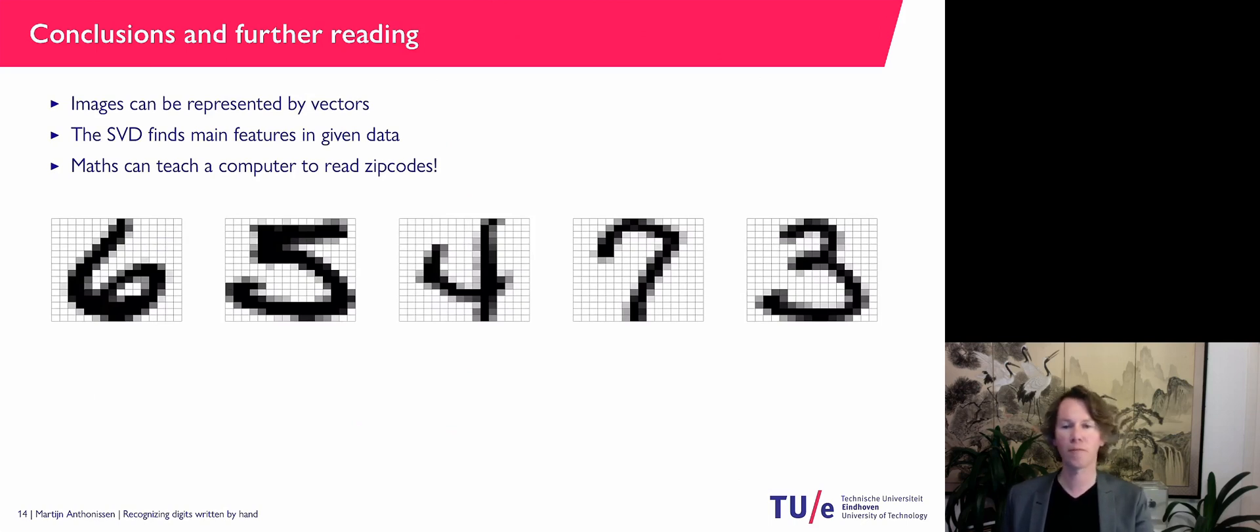Images can apparently be represented by vectors. And once you have vectors, you can do all the mathematics with vector linear algebra that you know. The singular value decomposition can extract some features in the given data. And apparently, this can help to teach a computer to read zip codes.